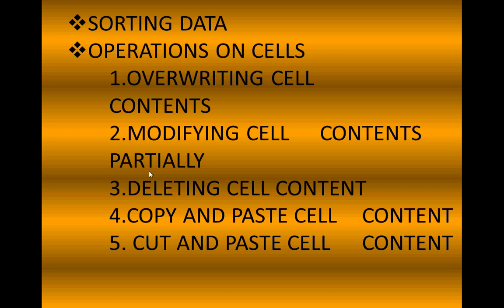Then operations on cells we did in the previous class: overwriting cell contents — if something is written and you want to change it, you can overwrite it. Modifying cell contents partially using the F2 key — when half part is correct and half is wrong. Then deleting cell contents, copy and paste with Ctrl C and Ctrl V, and cut and paste with Ctrl X and Ctrl V.